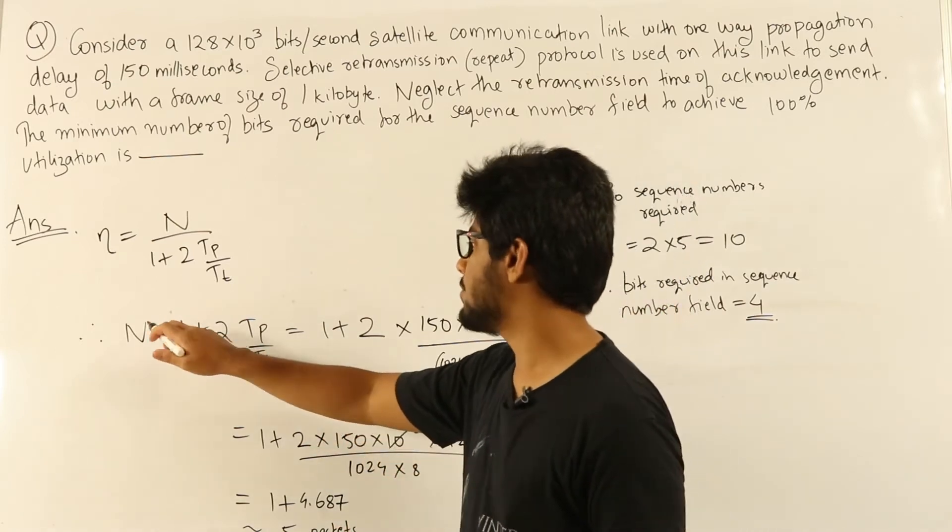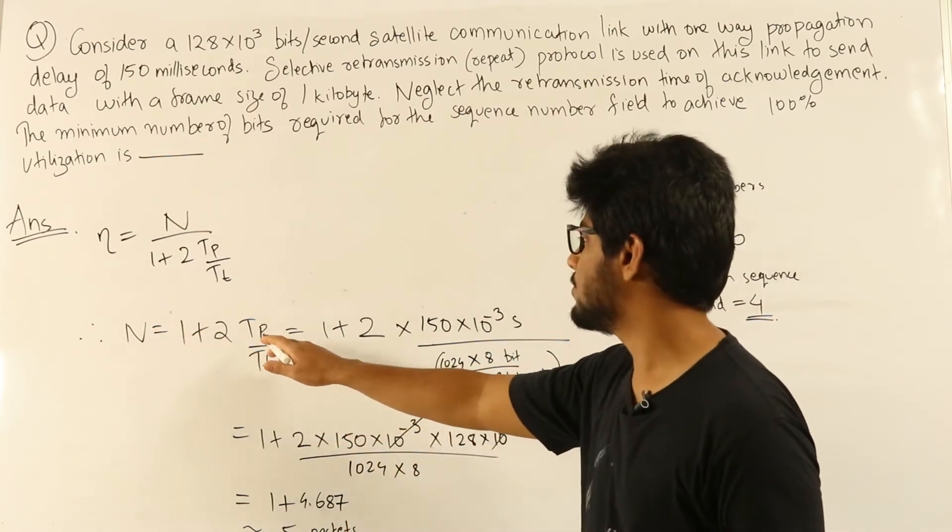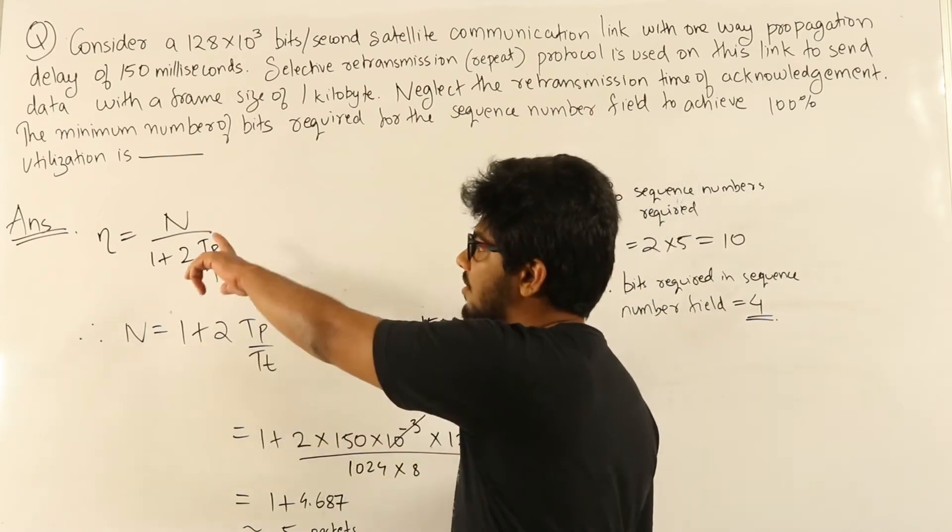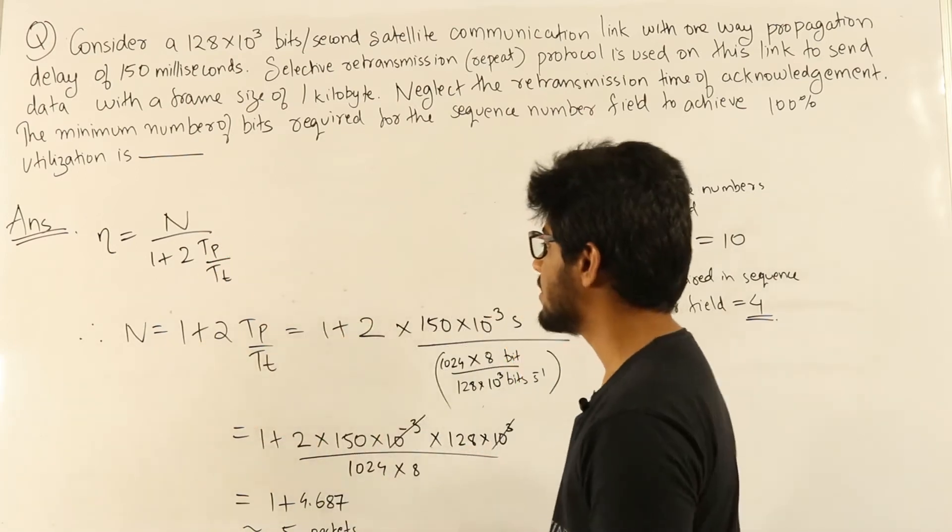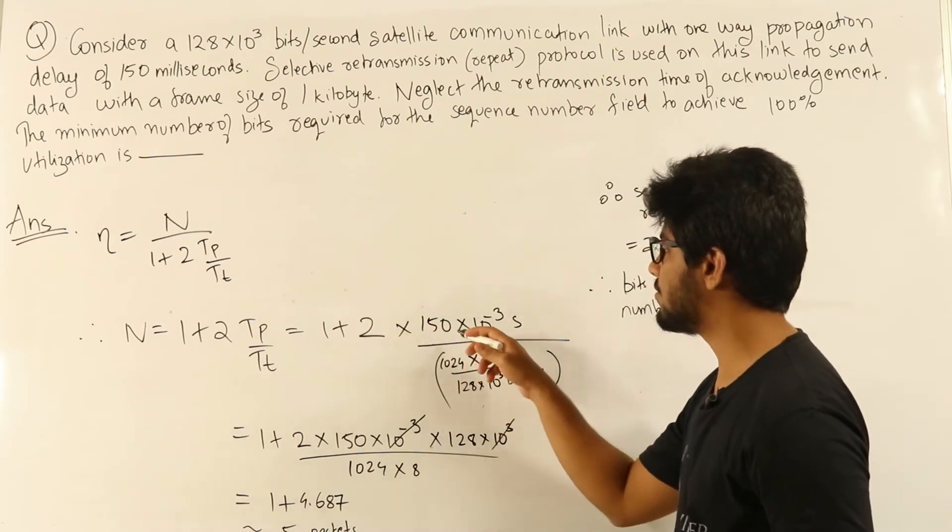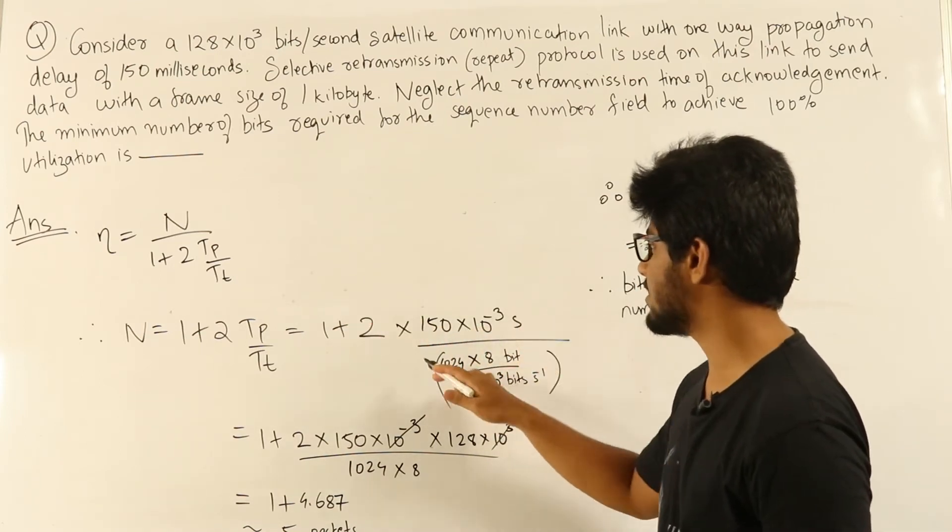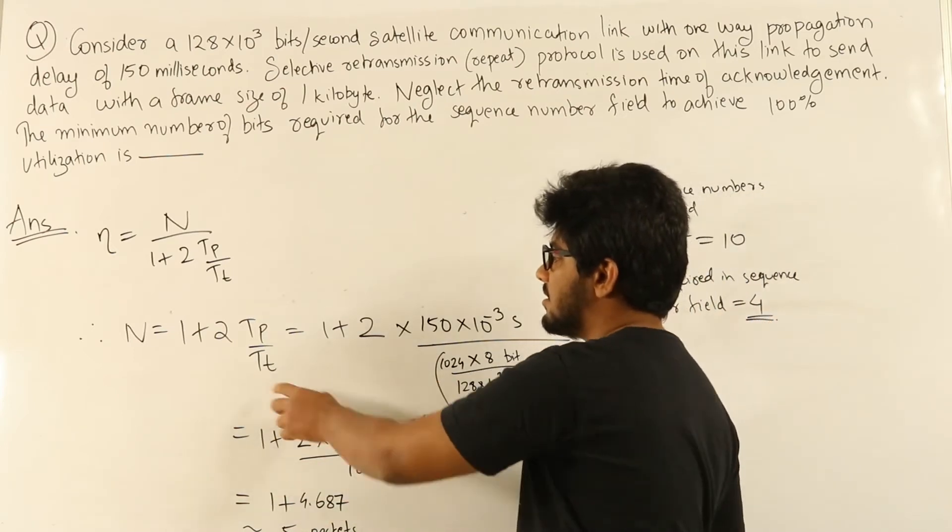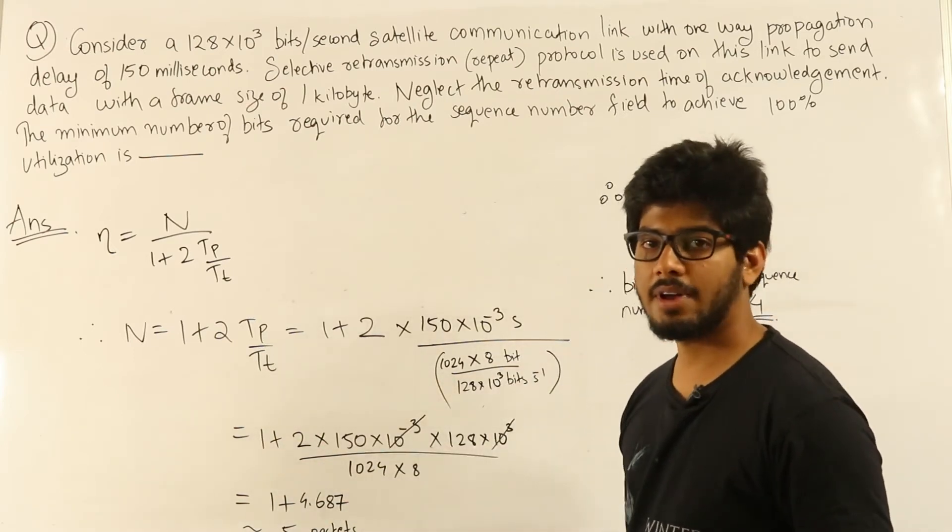This means n = 1 + 2(Tp/Tt) if we want 100% efficiency. That equals 1 + 2 × propagation delay, which was given as 150 milliseconds (150 × 10⁻³ seconds), divided by transmission time, which is packet size divided by bandwidth.